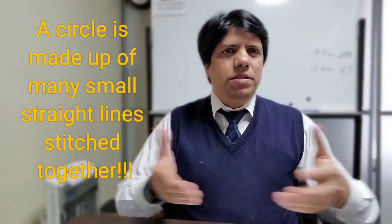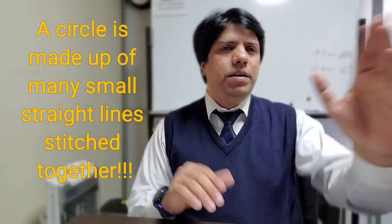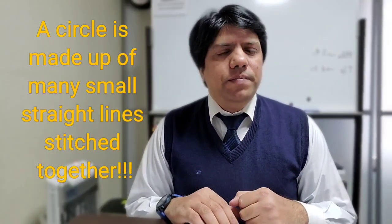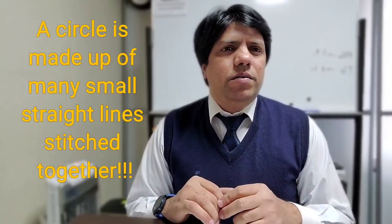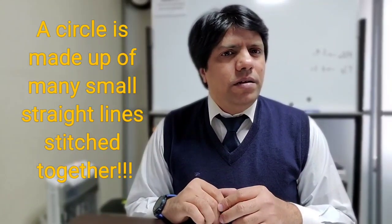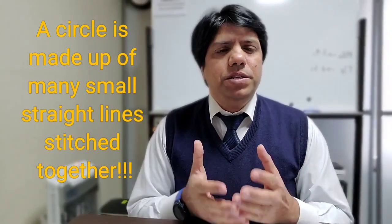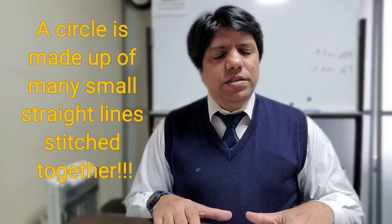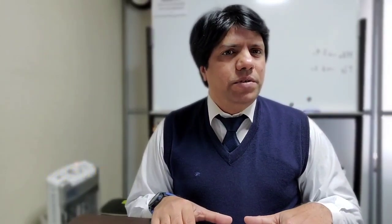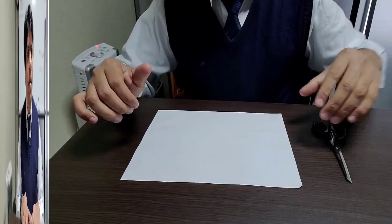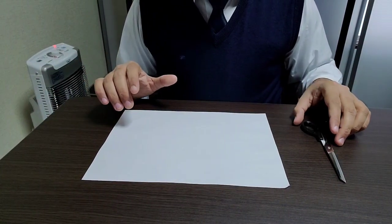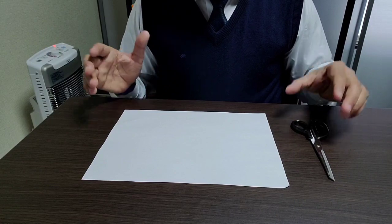But actually straight lines are what make a circle. Now how do you explain it to children? Through this simple experiment we will attempt to do that. So without further ado, let's get started.